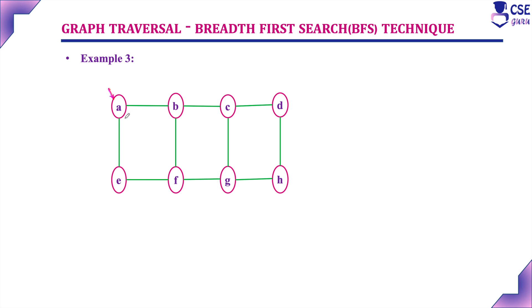The procedure is: initially in the given graph, we need to consider one vertex as the starting vertex. Here we will consider vertex A as the starting vertex and mark A as visited. Then we need to identify the adjacent unvisited vertex to the currently visited vertex. Currently visited vertex is A; adjacent unvisited vertices are B and E. One by one we need to visit — first we visit B, then we visit E.